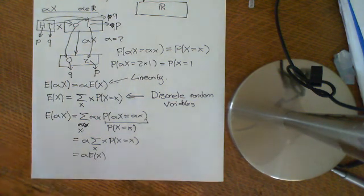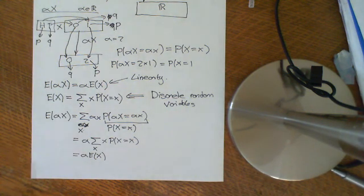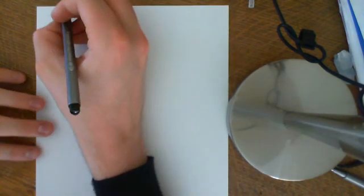So if you have a probability distribution on real numbers and you multiply all the real numbers by α and ask what the expected value is now, it should be α times whatever the expected value was before. That's the first result of linearity. Now we'll do the second result of linearity, which is far less trivial and not as easy to guess. We'll cover this in the second part of the video.